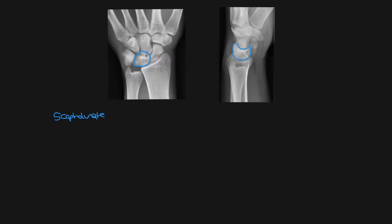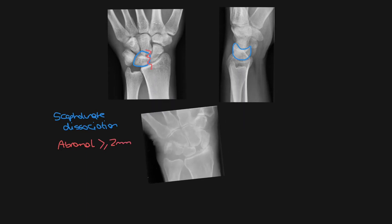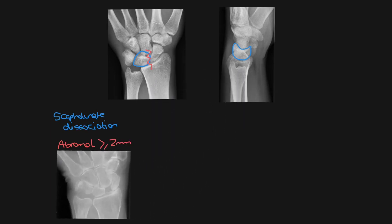Let's take a look at the injuries related to the lunate bone, which fall in a spectrum. At the least severe end of the spectrum is a scapholunate ligament dissociation. On a PA view you shouldn't see a distance of more than two millimeters between the scaphoid and the lunate, as is seen here in this example, which confirms a scapholunate ligament dissociation.